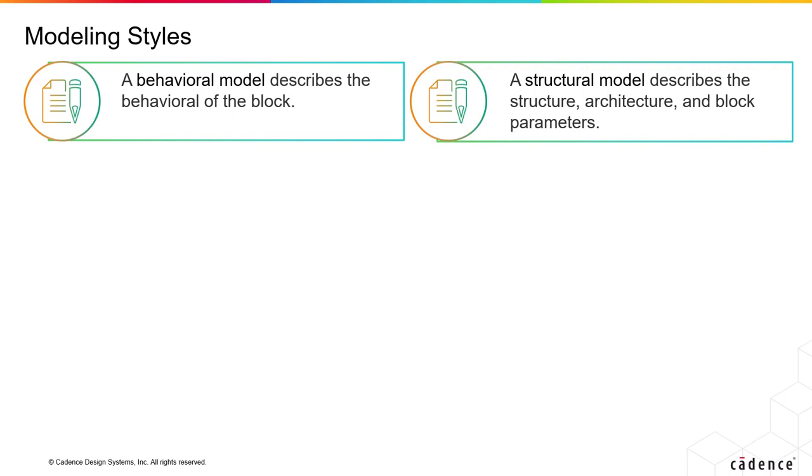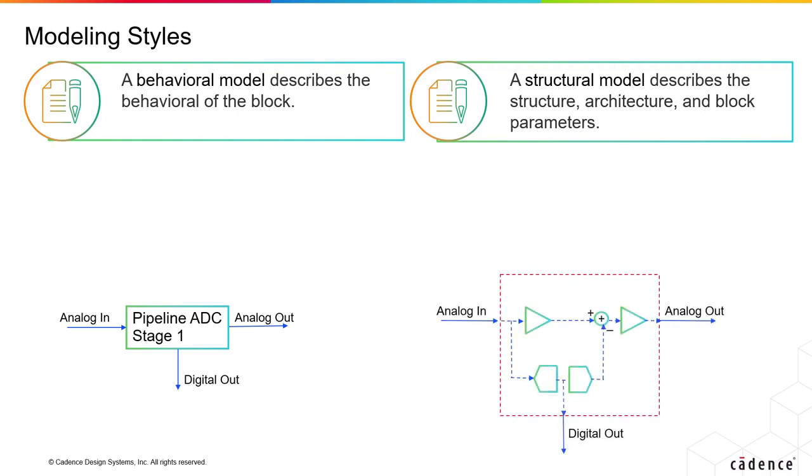When it comes to modeling styles in Verilog AMS, essentially you can use two different ways to build a model for something. One is the behavioral model, which describes the behavior of the block, and the other one is the structural model, which describes the structure, architecture, and block parameters.